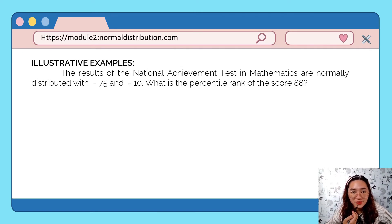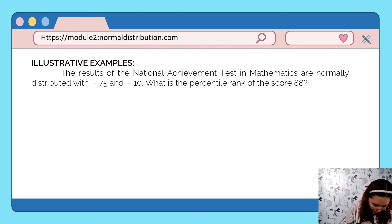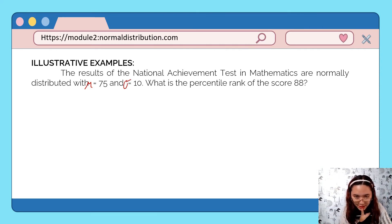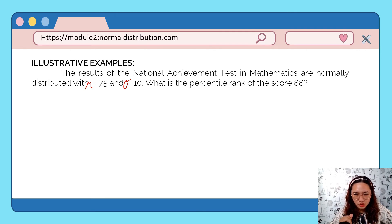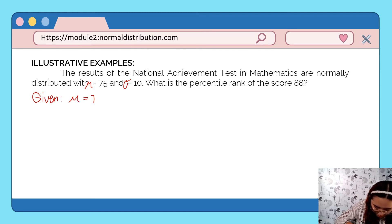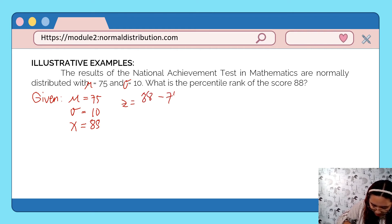Let's have some illustrative real-life examples. The results of a national achievement test in mathematics are normally distributed with mean 75 and standard deviation of 10. What is the percentile rank of the score 88? Earlier, we were finding the z-score given the percentile rank. Now, we're finding the percentile rank given a score. Since 88 is a raw score, we need to convert it into standard form. Let's identify our given first. We have mean 75 and standard deviation of 10, and our raw score is 88. Let's convert it.